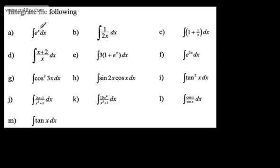We're asked to integrate the following. The first one is the integral of e to the x with respect to x. Often when we're dealing with these, it's easier to think about what the derivative of the function is. So if we've got e to the x and we differentiate it, we get e to the x. Therefore, when we integrate it, we're also going to get e to the x, plus a constant of integration.